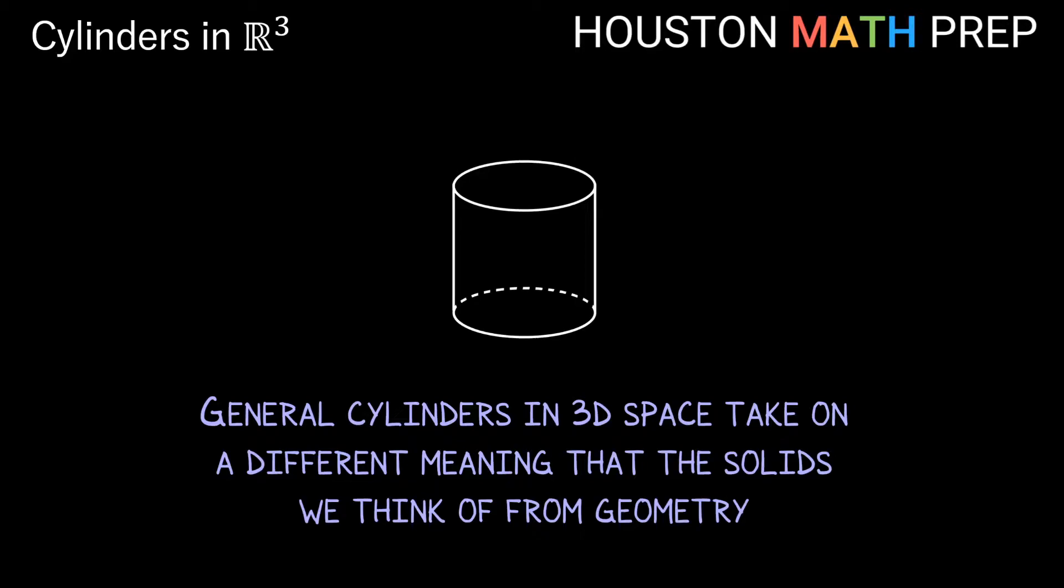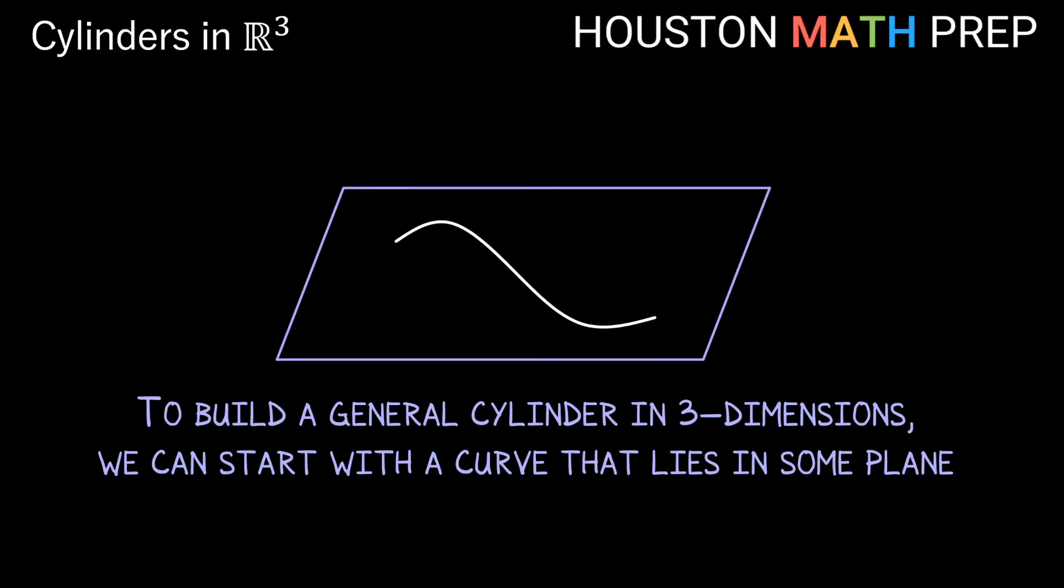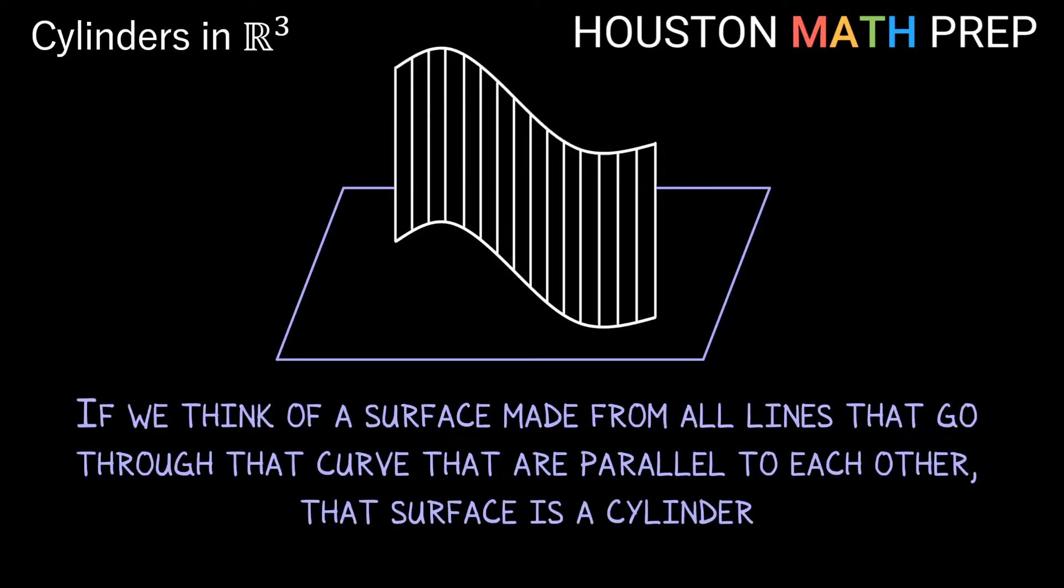A general cylinder in R³ isn't anything that has to be circular. In fact it doesn't even have to be a specified height. A general cylinder in three dimensions can be built using any curve in some plane, and if we imagine taking all the lines going through that curve that are parallel to one another that stick out of that plane, that gives us our cylinder.